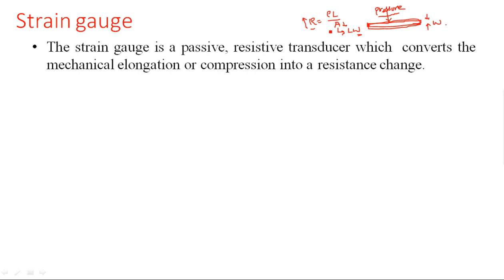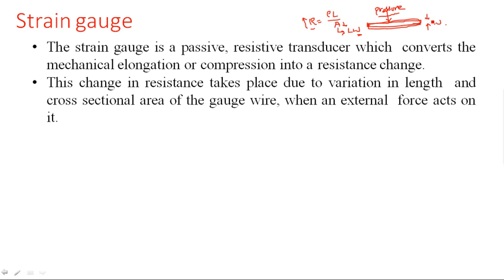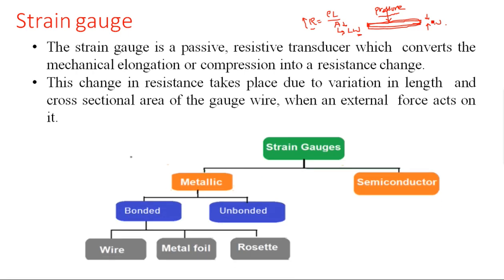So when we apply pressure on this connecting wire, it results in a change in the resistance value — this is what the strain gauge does. For example, if a train is moving on a railway track, the amount of strain that the track feels can also be calculated using a strain gauge. Compression or elongation both result in a change in resistance due to variation in length and cross-sectional area when an external force acts on it.